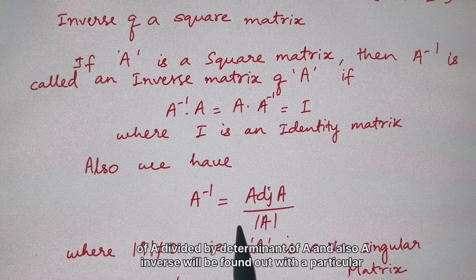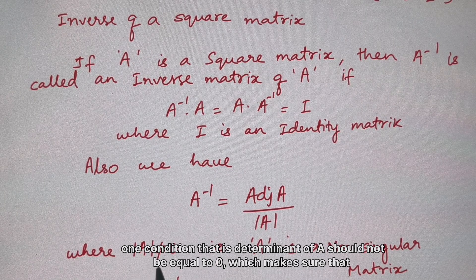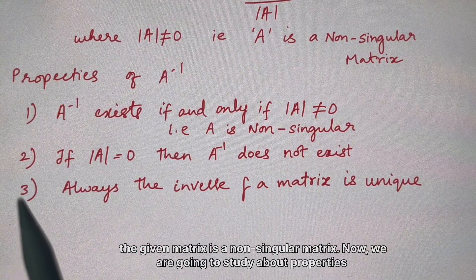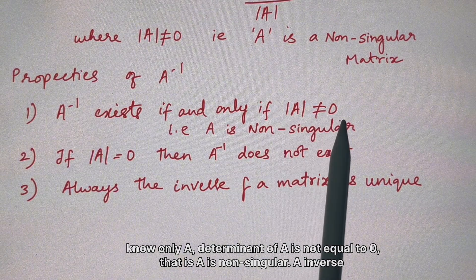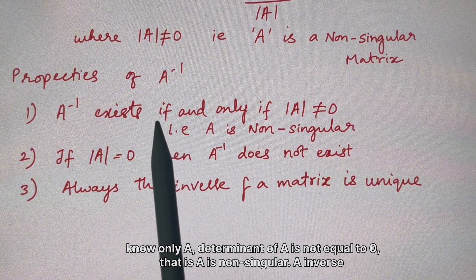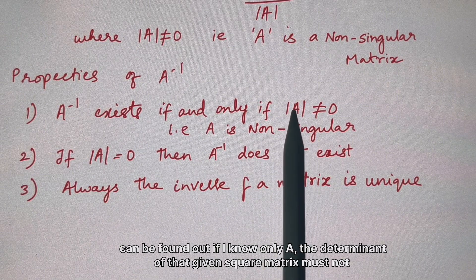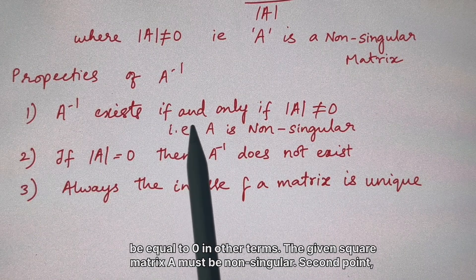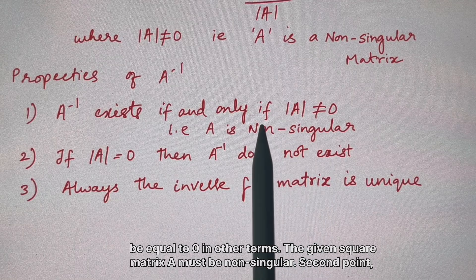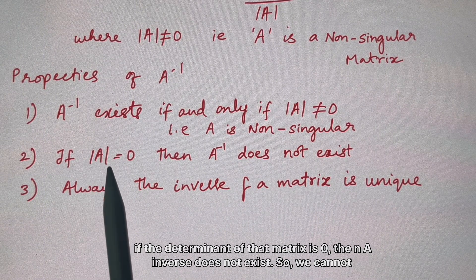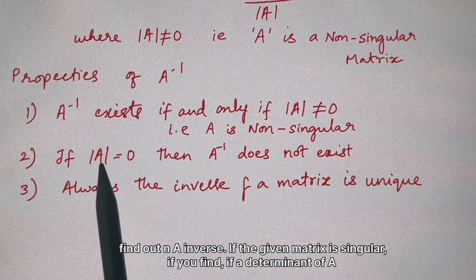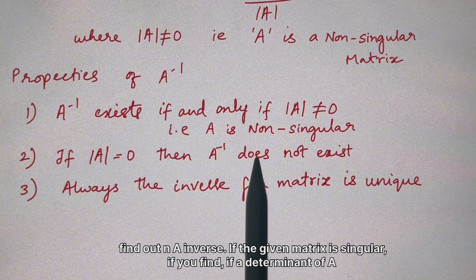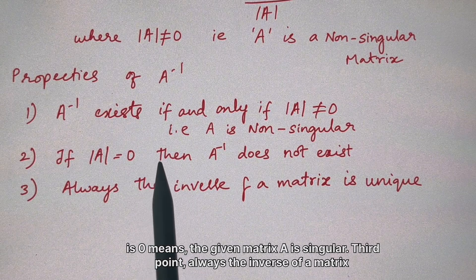The properties of A⁻¹: First, A⁻¹ exists if and only if the determinant of A is not equal to 0, meaning A must be non-singular. Second, if the determinant of A is 0, then A⁻¹ does not exist — we cannot find the inverse if the given matrix is singular. Third, the inverse of a matrix is always unique.